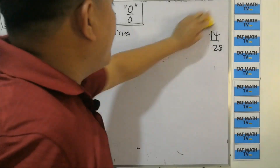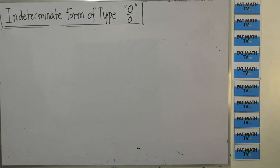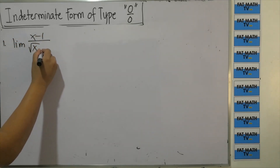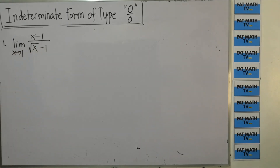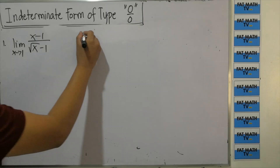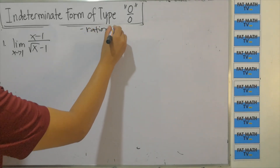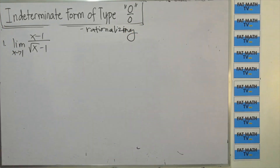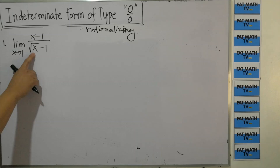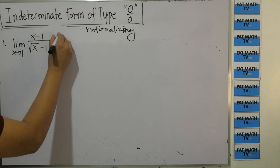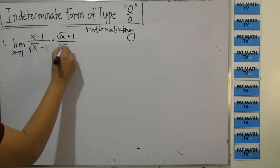We can use factoring for indeterminate forms, but sometimes we have a square root — for example, the limit of x minus 1 over square root of x minus 1 as x approaches 1. Substituting 1 gives 0 over 0. In this case, we use the second technique: rationalizing. We multiply both numerator and denominator by square root of x plus 1 over square root of x plus 1 to eliminate the square root in the denominator.